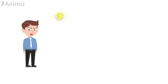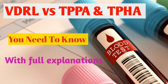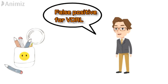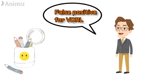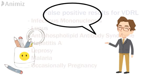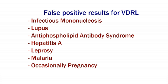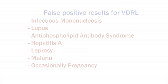Now let's discuss the false positive results of the VDRL test. False positive means a result that indicates a given condition is present when it is not — for example, the patient is not actually having syphilis but their result is showing positive. The VDRL test is sometimes positive in the absence of syphilis. A false positive VDRL can be encountered in infectious mononucleosis, lupus, antiphospholipid antibody syndrome, hepatitis A infections, leprosy, malaria, and occasionally in pregnancy. The RPR and ART tests are similar and can also give false positive results.